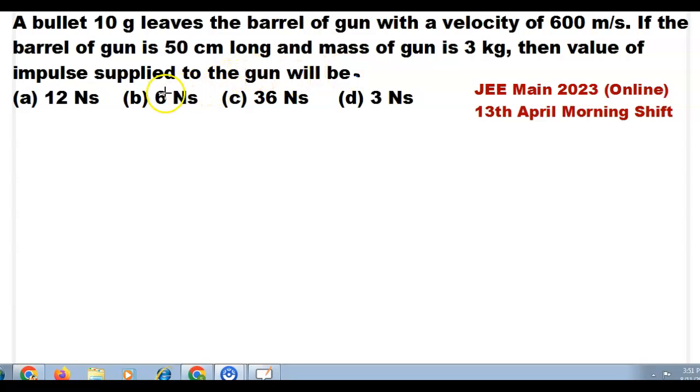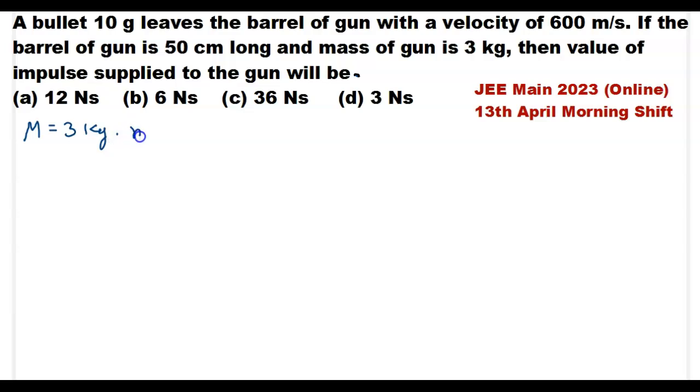That means I need to calculate the value of the impulse supplied to the gun. I am given the mass of the gun is 3 kg, and the mass of the bullet M is equal to 10 gram.